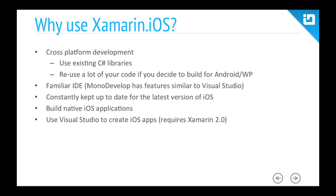So why might you want to use Xamarin.iOS? It gives you cross-platform development — you can reuse your existing C# libraries. If you want to build applications for iOS, Android, and Windows Phone, you can reuse a lot of your back-end code, using Mono for Android on Android, and C# natively on Windows Phone. You also get to use a familiar IDE. MonoDevelop — now Xamarin Studio — has features similar to Visual Studio, and in Xamarin 2.0 you can also use Visual Studio directly.